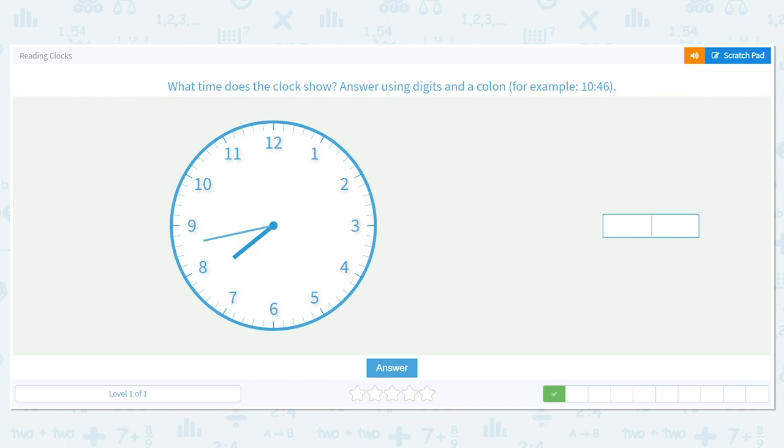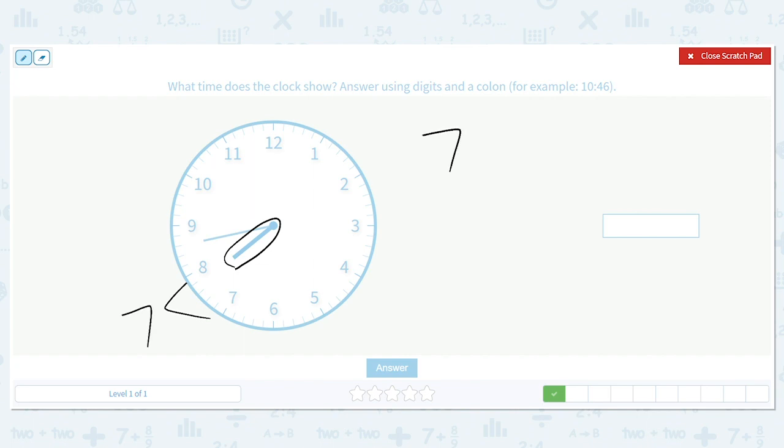Next one. Same thing. What is our hour? It's between 8 and 7. The rule is you always go back. So that means our hour is 7. Let's extend our minute. Now I'm going to count by fives here. 5, 10, 15, 20, 25, 30, 35, 40.